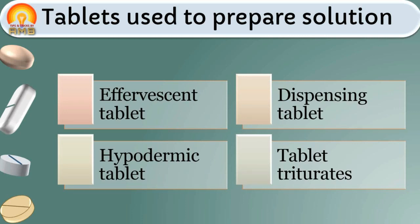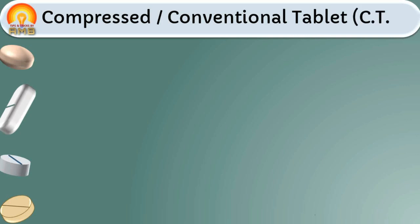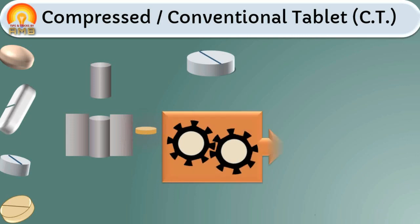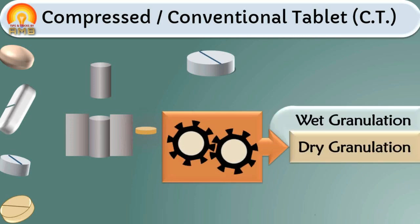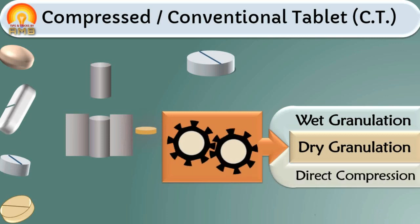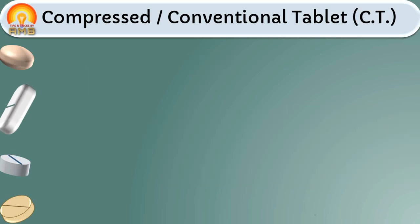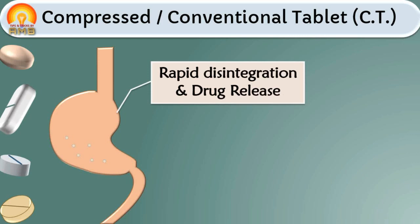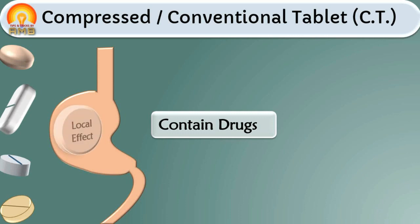In this presentation we are discussing about tablets for oral ingestion. The first type is compressed tablet, also called CT. These are standard uncoated tablets made by compression. These are manufactured by wet granulation, double compaction (also called dry granulation), or direct compression method. These tablets provide rapid disintegration and drug release, producing quick effect.